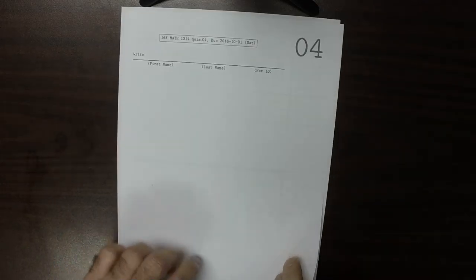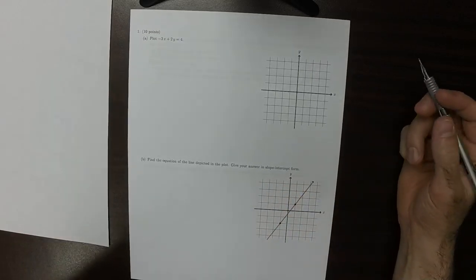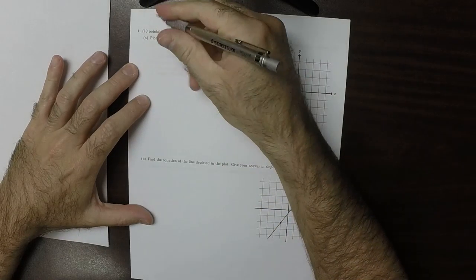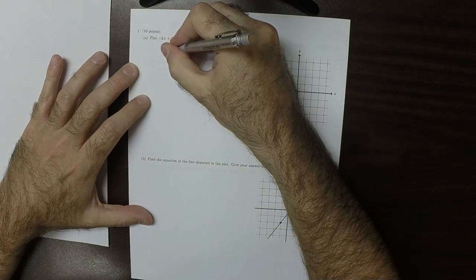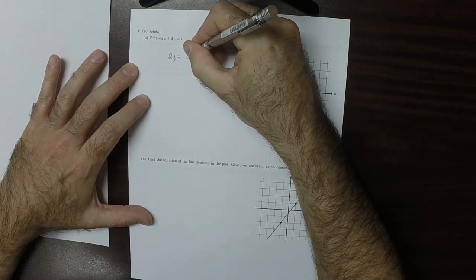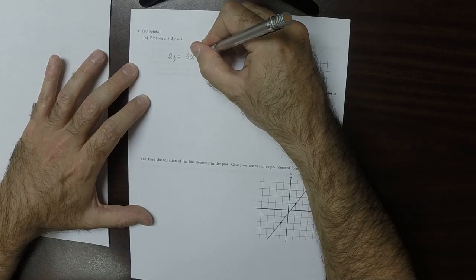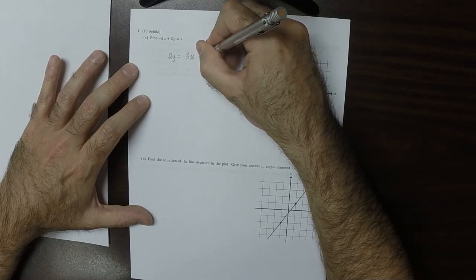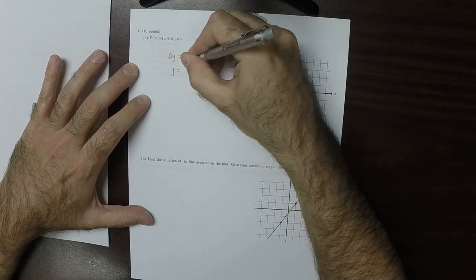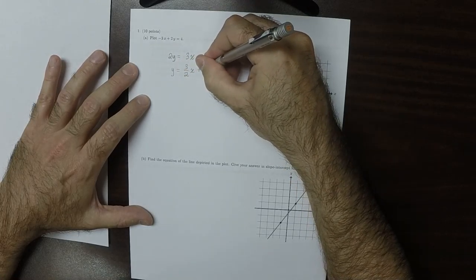This is the solution to quiz 4. The first question is to plot this equation. So if we take this equation, we can move the 3x to the other side, and then it's 3x plus 4, and then divide by 2, so y is 3 halves x plus 2.